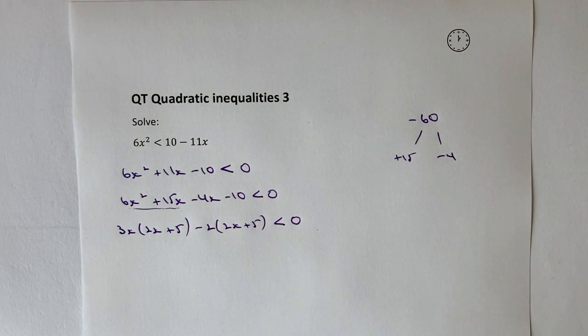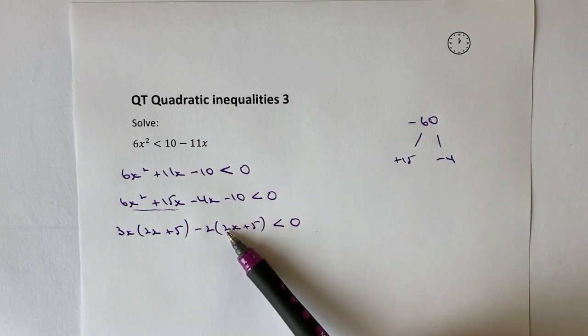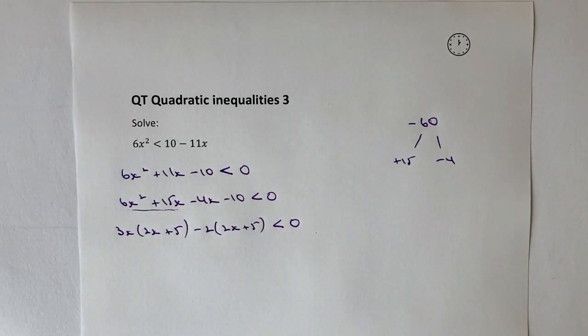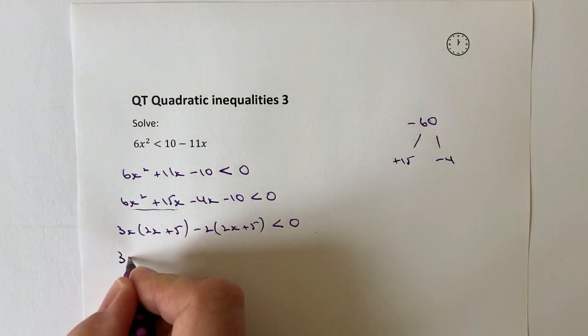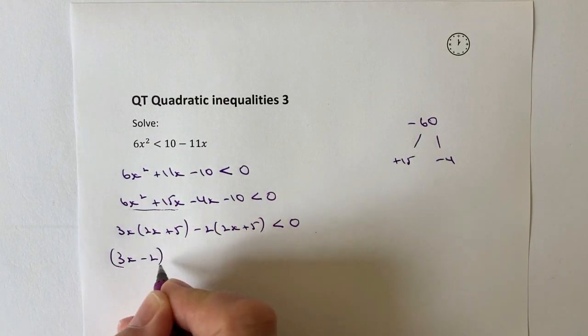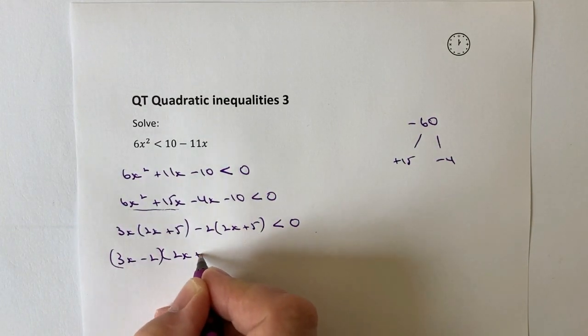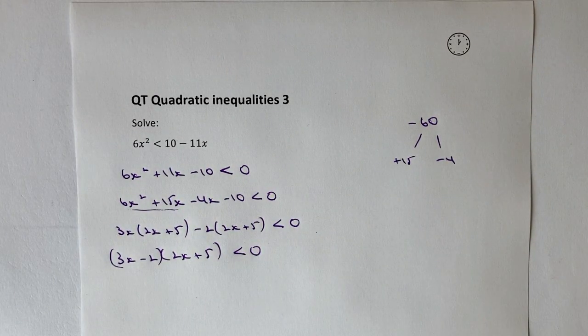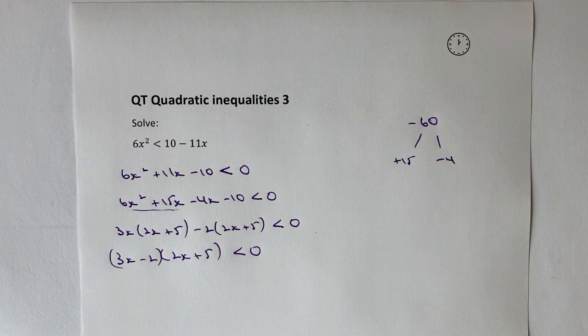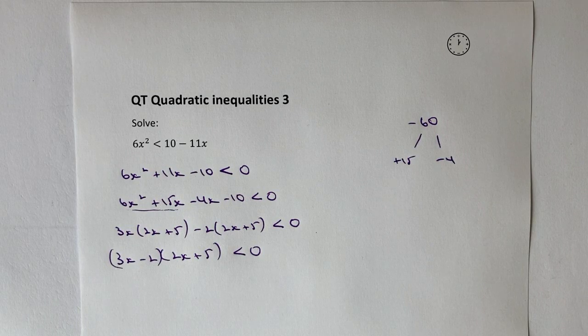Okay, so now I'm in a position where I've got these two common factors to these four terms. So, what I'm going to do then is I'm going to bring these two together and rewrite this as 3x minus 2 times 2x plus 5 and that's less than zero. Okay, now that particular technique is one that I will produce a playlist on so you'll be able to have a look at why we do it in that particular way.